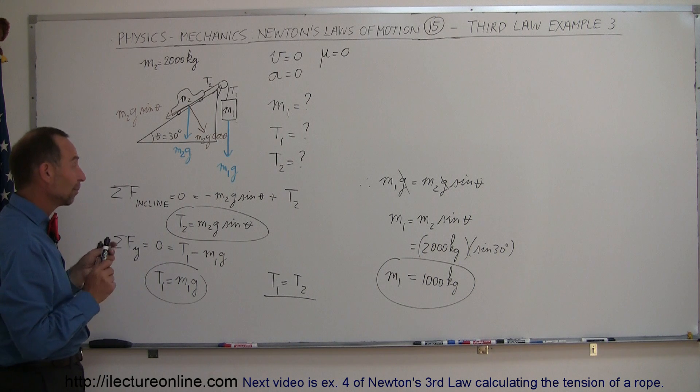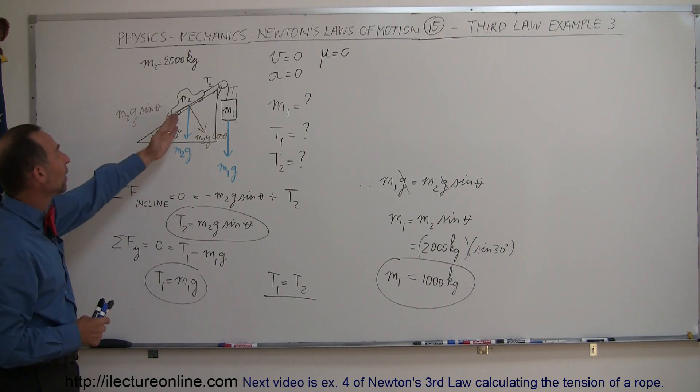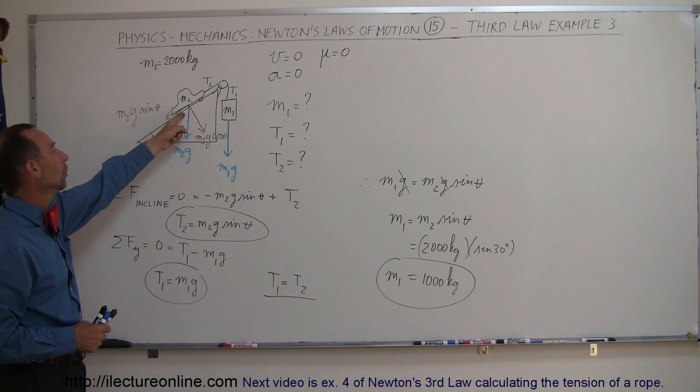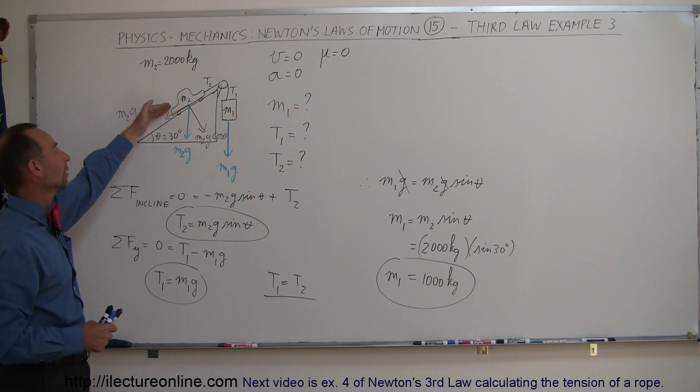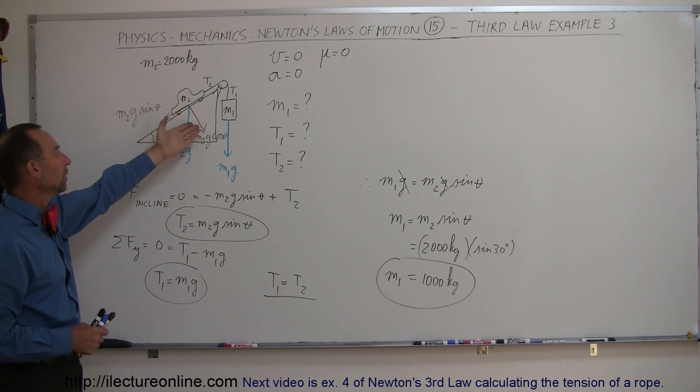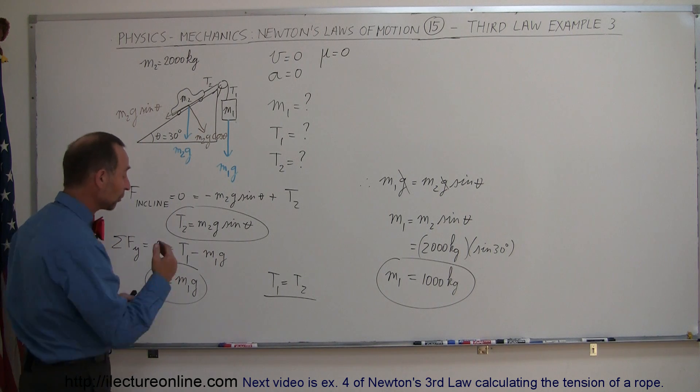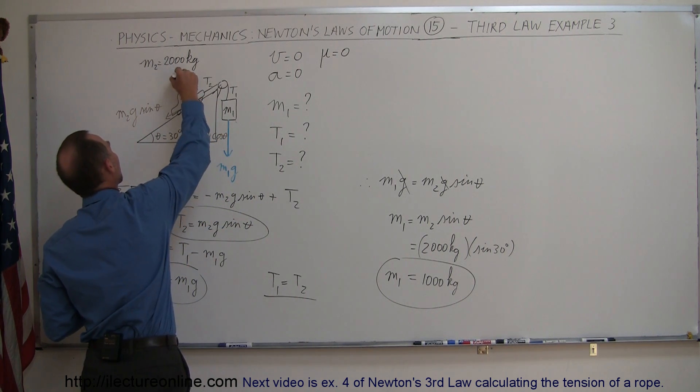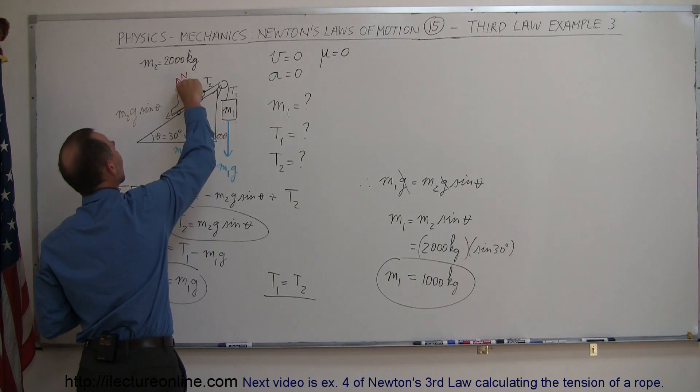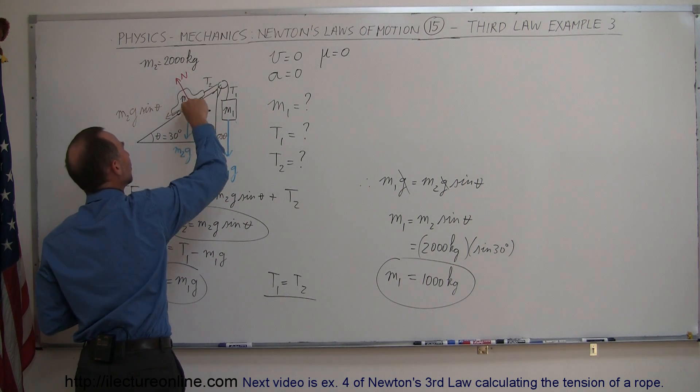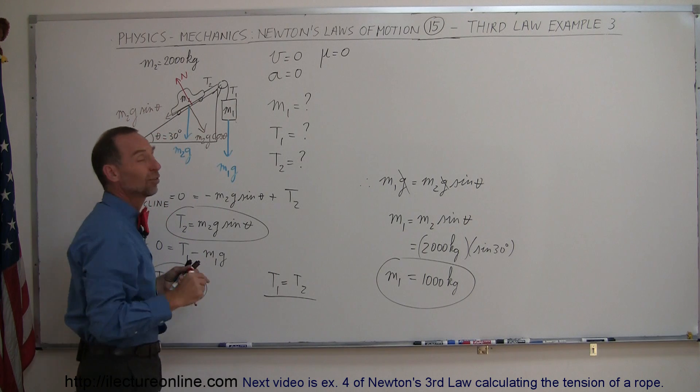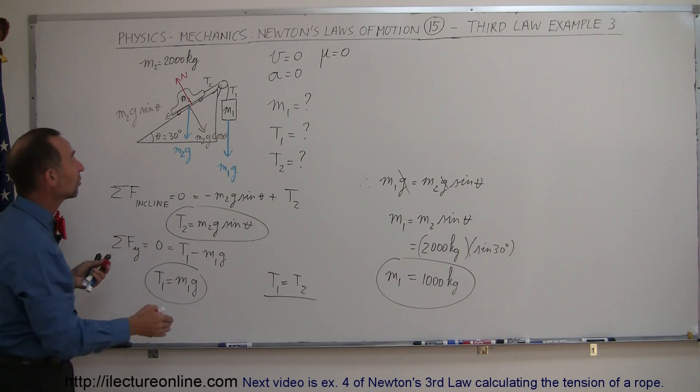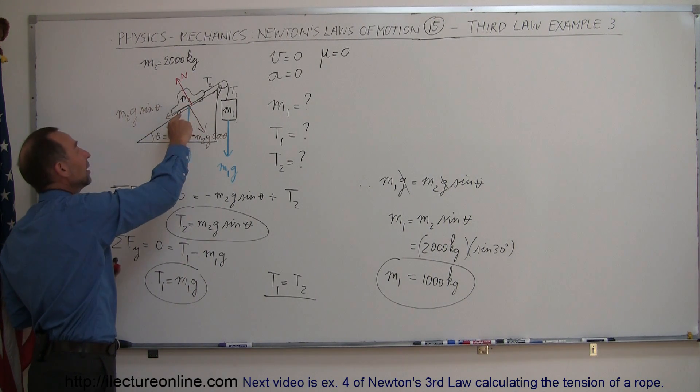But just make sure you get these concepts. We have an object on an incline. We can draw the perpendicular and parallel components of that force. The perpendicular component is going to have a normal force pushing back. We didn't draw that one yet, so we are going to have a normal force pushing back right there. Notice that the magnitude of the normal force is equal to the magnitude of M2G cosine theta, opposite direction, so these two cancel each other out.